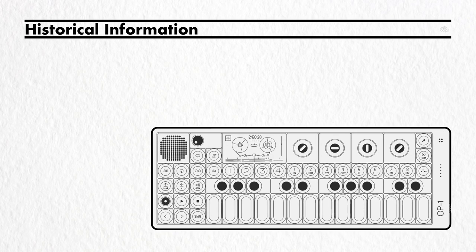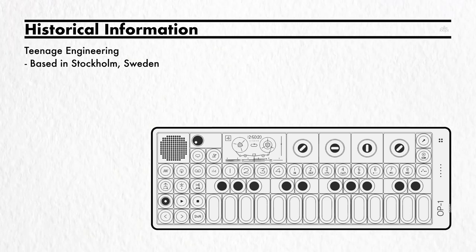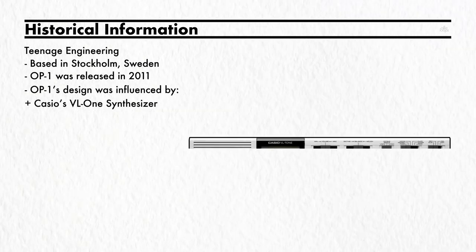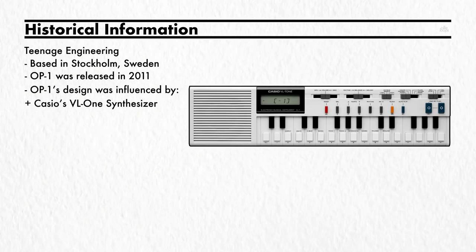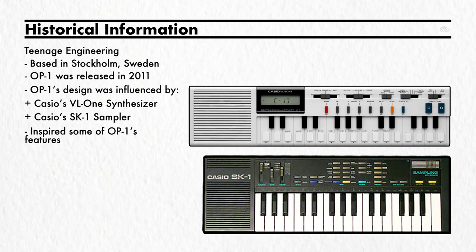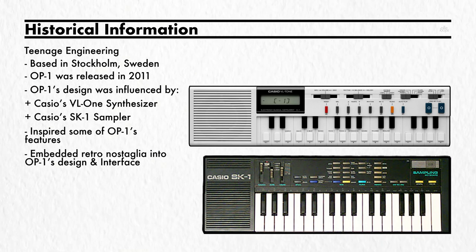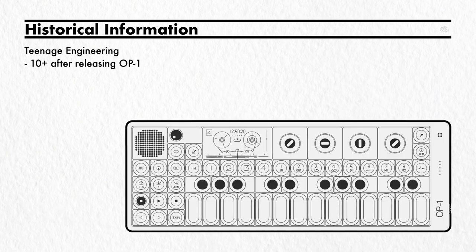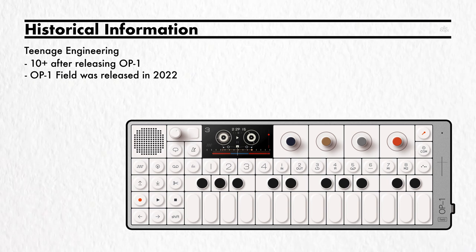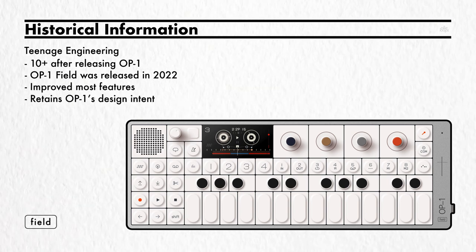OP-1 was first introduced by the Stockholm-based company Teenage Engineering at the NAMM show in 2010 and officially released in 2011. Its design was influenced by Casio's VL-1 synthesizer as well as Casio's SK-1 sampler. These devices not only influenced some of OP-1's features, but retro nostalgia was embedded into its design and interface. Roughly ten years after its initial debut, TE released an updated version called OP-1 Field, which improved most features while retaining the original design intent.